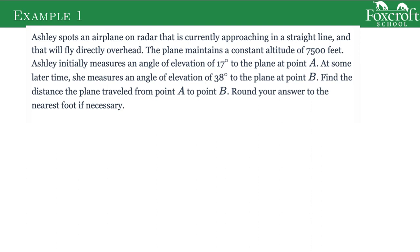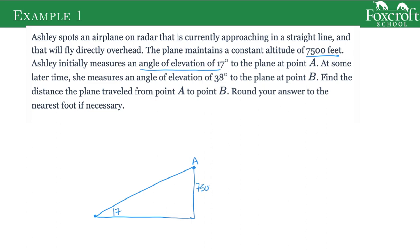We have this airplane that's approaching in a straight line, maintaining a constant altitude, and she measures an angle of elevation of 17 degrees to the plane at point A. So if I draw the picture to start, it's an angle of elevation, so looking flat and then upward at the plane at 17 degrees — that is going to be point A. That gives me a right triangle, and this point A represents where the plane is, and the plane is flying 7,500 feet up.